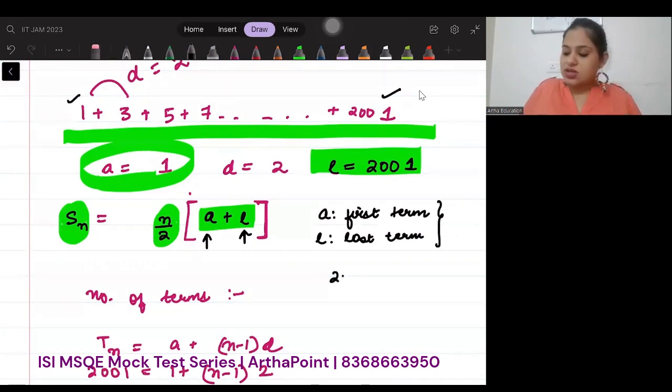Some students will just say it will be 2001 minus 1, so there are 2000 terms, but they are only taking the odd terms so they will divide it by 2 and get 1000.